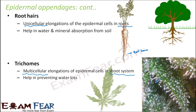Comparing root hairs and trichomes, there are quite a few differences. Root hairs are seen in roots; trichomes are seen in the shoot system. Root hairs are unicellular; trichomes are multicellular. Root hairs are very rarely branched, whereas trichomes can be branched or unbranched.